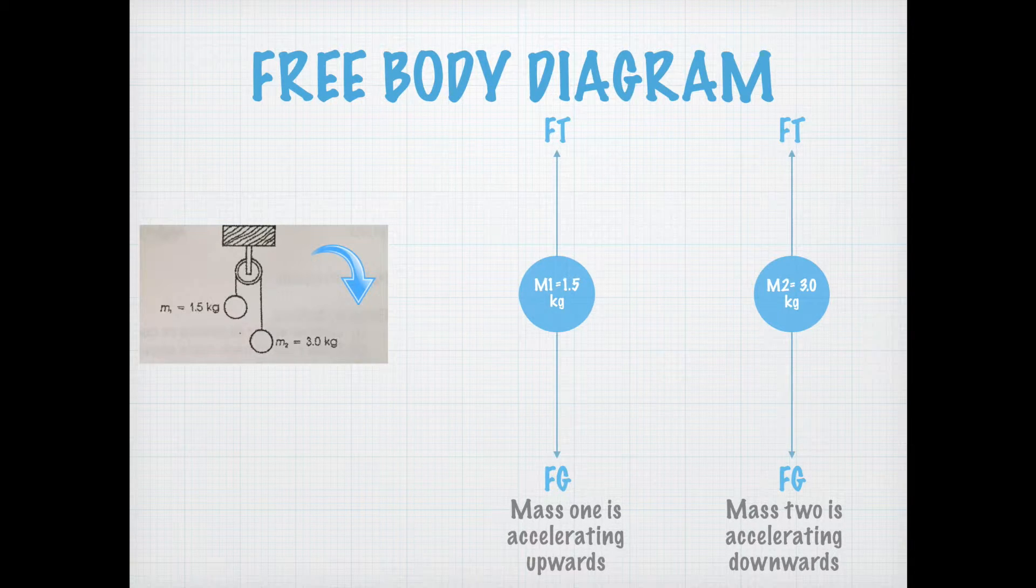Now we have set the direction of acceleration for the system. We know that mass 1 is accelerating upwards and mass 2 is accelerating downwards. Because the two masses are not on a surface, there is no force of normal. There is only a force of gravity and a force of tension acting on each mass.